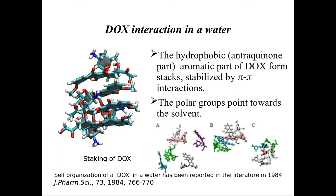Finally, we found a stable stack of five doxorubicin molecules, which you can also see on the large figure. This stack of doxorubicin molecules is stabilized by pi-pi interactions between the aromatic anthraquinone part of the drug, such that the polar groups in the stack point toward the solvent. Such stacking of doxorubicin molecules was observed experimentally in 1984, where spectroscopy methods were used to estimate the dimerization constant of doxorubicin molecules. In this study, we observed that the stability of the stack is governed by pi-pi intermolecular interactions.